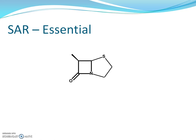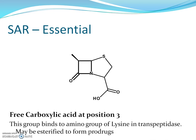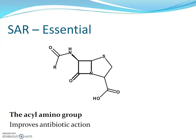The second essential feature is the bicyclic form — the beta-lactam ring is attached to a thiazolidine ring. This bicyclic ring system increases the strain on the beta-lactam ring, making it more reactive to the serine hydroxyl, which again increases reactivity but also instability. The third essential feature is the free carboxylic acid at position three. This group binds to an amino group of lysine in transpeptidase, making the binding more tight and perfect. It may be esterified to form prodrugs to increase absorption.